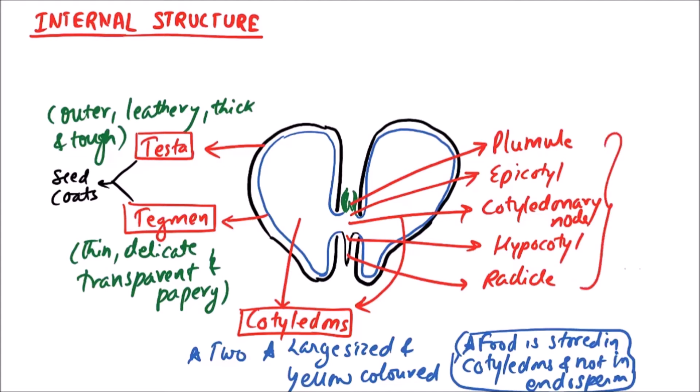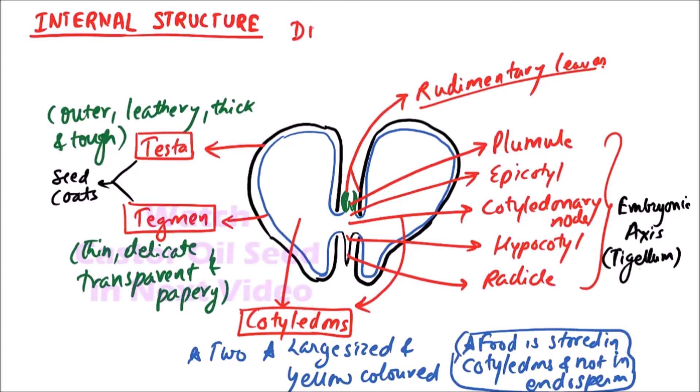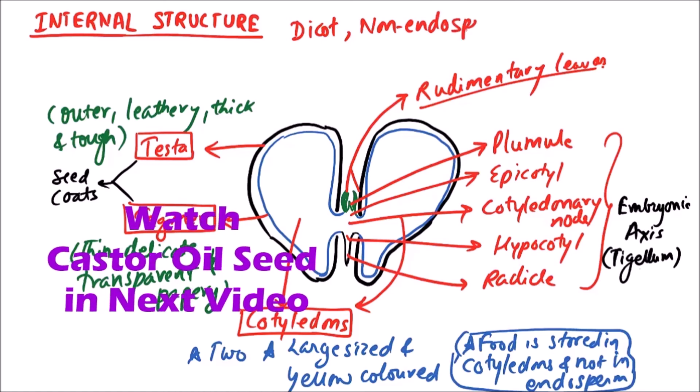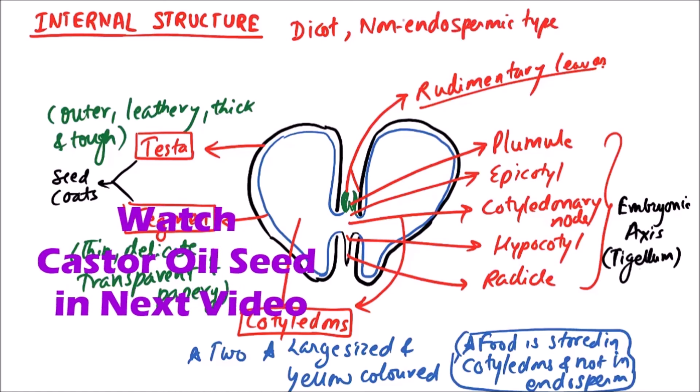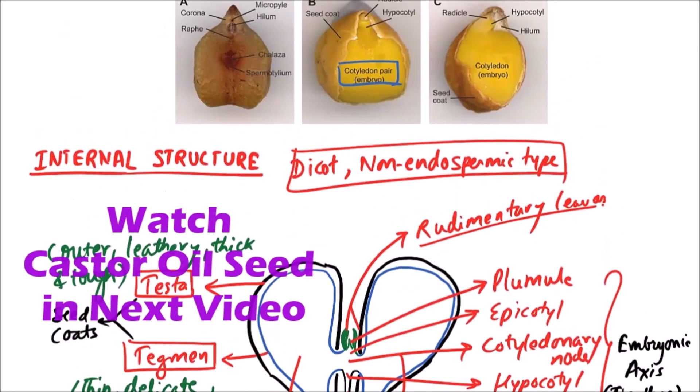This whole structure constitutes the embryonic axis or tigellum. There may be some rudimentary leaves. This is about the gram seed structure. The gram seed structure is dicotyledonous and non-endospermic type. So this is about the structure of gram seed.